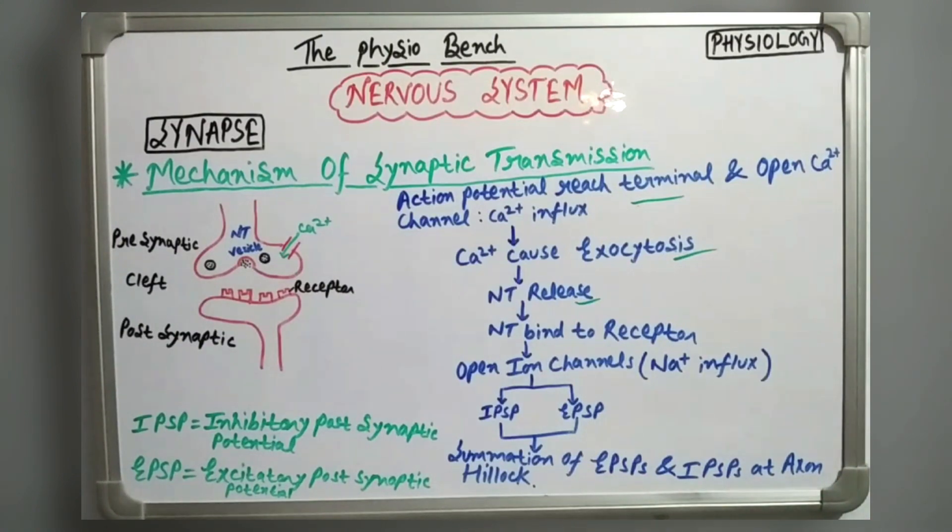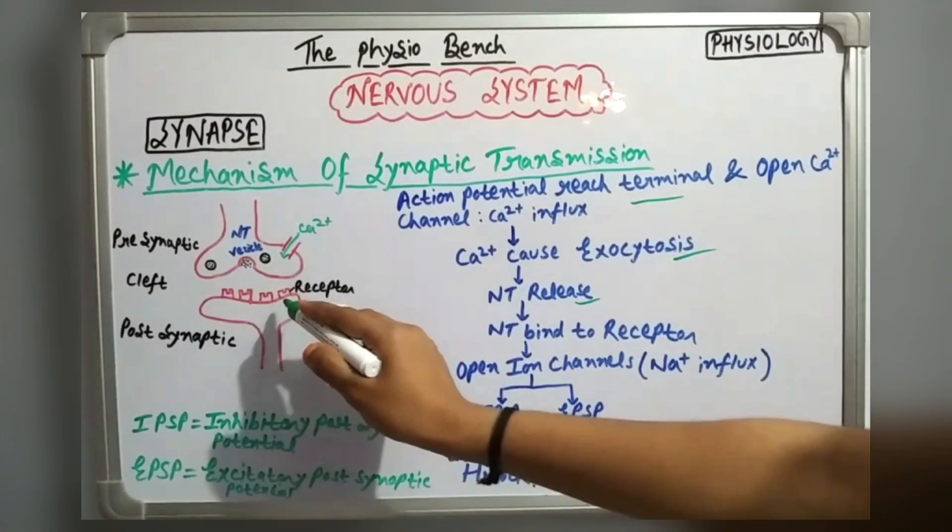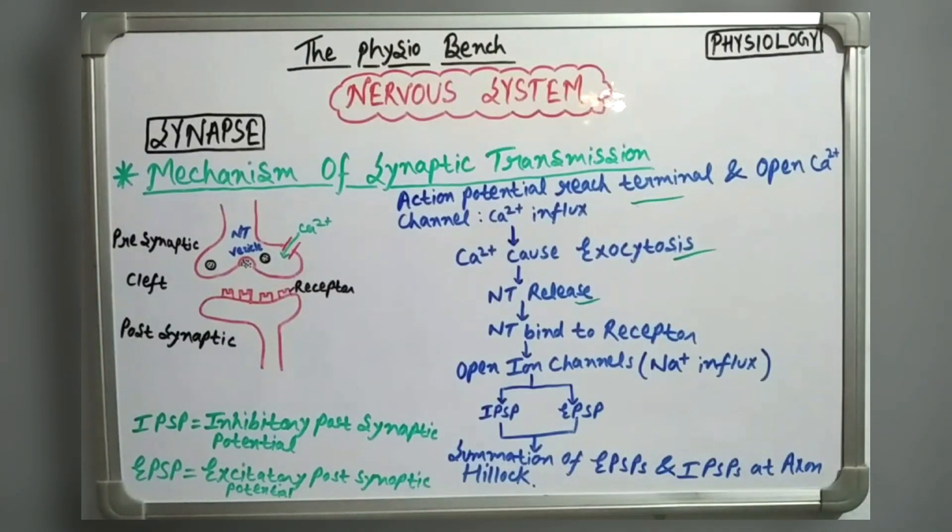The neurotransmitter binds with the receptor on the post-synaptic neuron. When ion channels open, sodium influx will occur. You can see IPSP or EPSP - inhibitory post-synaptic potential or excitatory post-synaptic potential. These summations occur at the axon hillock. As I told you in the previous video, it is the site of AP genesis. So this was the mechanism of synaptic transmission.